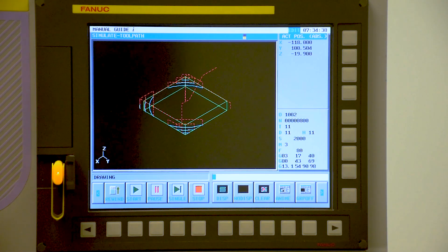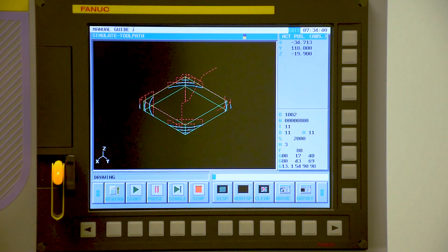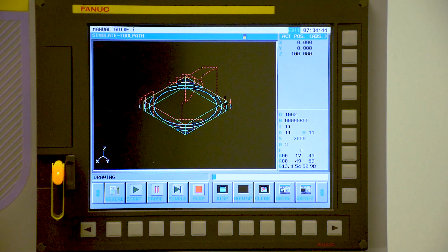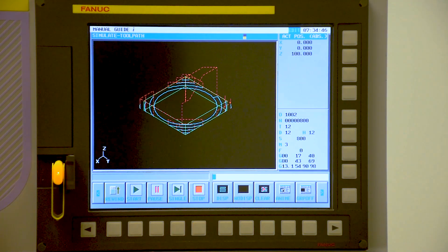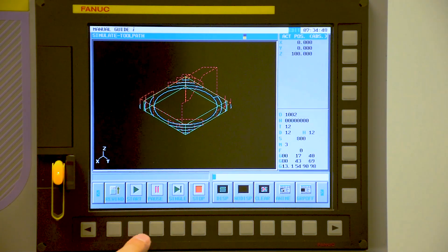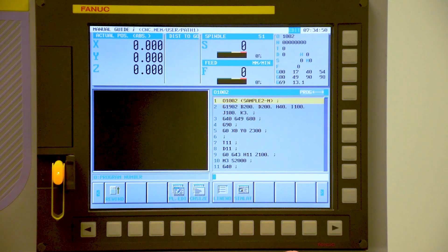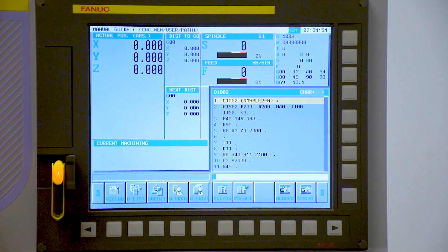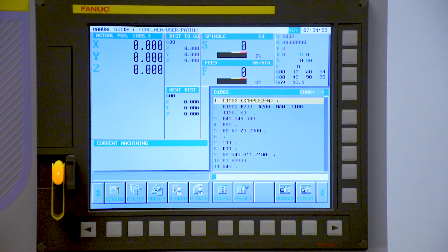Now, one other additional thing as we're still in simulation mode, we're not in real time. Our actual feeds and speeds are not accounted for. We can stop, rewind the program, turn the graphics back off. Now we select the control in auto mode. Some people call this memory mode on a machine. So now we're in auto.